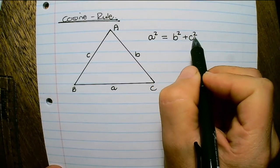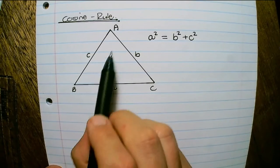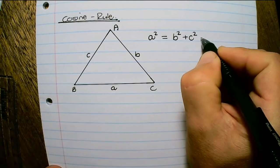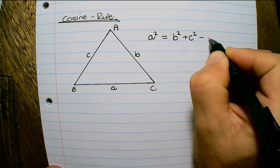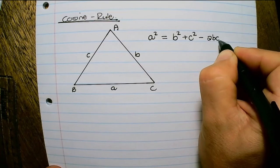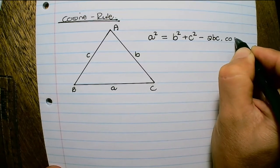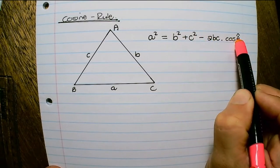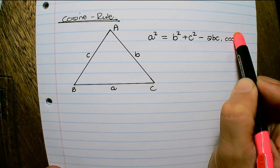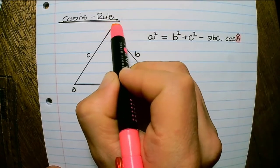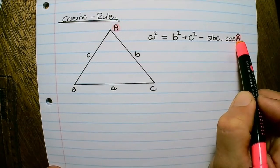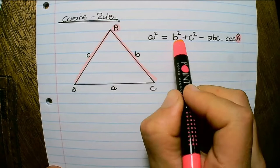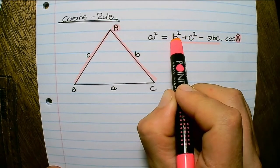We can only apply Pythagoras in right-angled triangles, and clearly this triangle is not right-angled, so we need to compensate. We say minus 2bc times the cos of A. So the cosine rule uses angle A within the equation, and that angle is between the two sides B and C used in the equation.